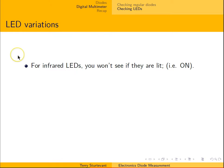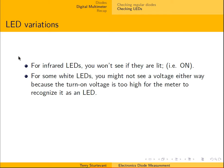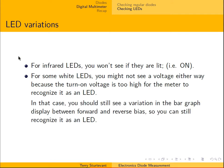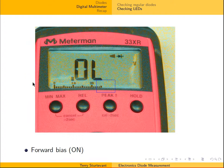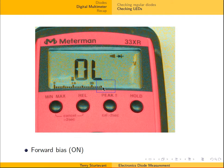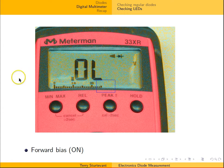For infrared LEDs, because they're infrared, you won't see if they're lit. And for some white LEDs, you may not see a voltage either way because the turn-on voltage is too high for the meter to recognize it as an LED. In that case, you should still see a variation in the bar graph display between forward and reverse bias, so you can still recognize it as an LED. Here, for example, is the reading for a white LED in reverse bias. Here we see it in forward bias where it's on — you'll notice the bar graph has gone down a bit. So there it is forward, there it is reverse. You'll notice that it does drop some from reverse to forward, but it's still not enough that in forward bias it shows up as a voltage.